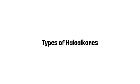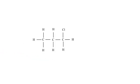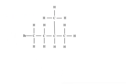Now let's look at the types of haloalkanes. There are three types of haloalkanes. The first one is primary haloalkanes — with primary haloalkanes, the halogen is on the first carbon atom. An example of this is 1-chloropropane. As you can see, Cl is on carbon number one, and not on carbon number three, because we find it on the most convenient side, which in this case is the right-hand side. So chloro is on the first carbon, making it 1-chloropropane — an example of a primary haloalkane.